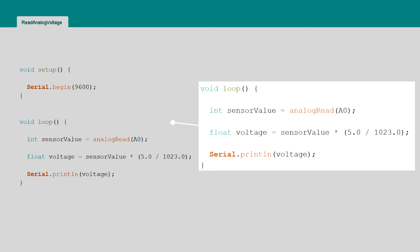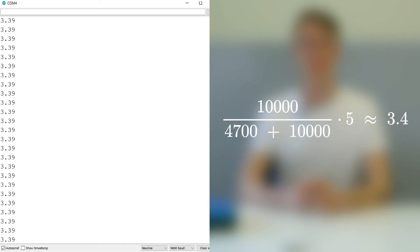Lastly, we print the voltage value to serial. As we can see, the measured voltage matches the expected output value of the voltage divider.